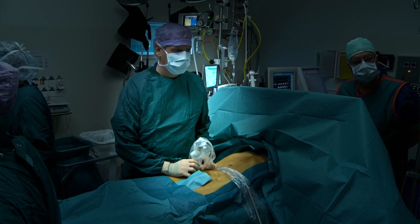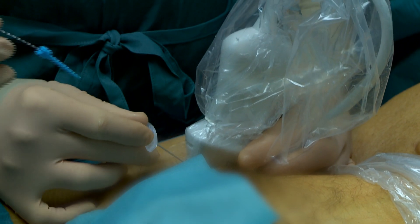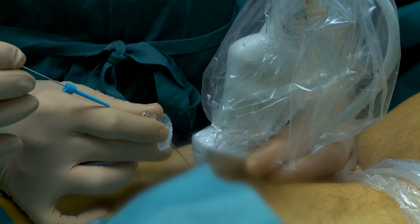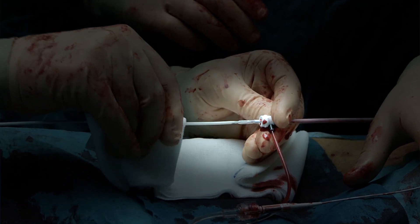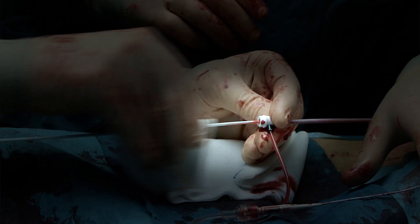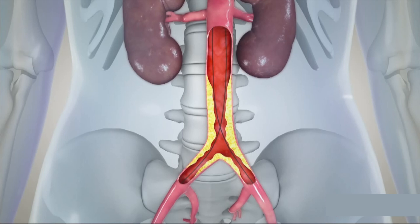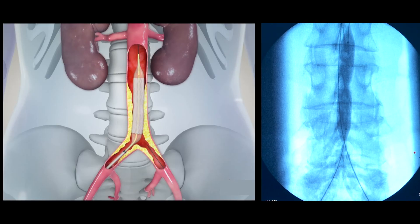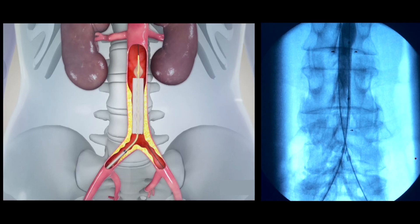During the procedure, we first introduce, using ultrasound, two small tubes into the femoral arteries. Then, using a small guide wire, the lesions on both sides are passed until we reach the aorta again. When both guide wires are in place, the first stent is being deployed in the aorta.